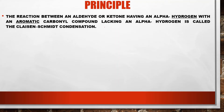Claisen-Schmidt condensation का principle यह है कि इसमें reaction होती है aldehyde या ketone compound की, जिसके पास एक alpha hydrogen होता है, और reaction होती है किसी aromatic carbonyl compound, means aromatic aldehyde या ketone के साथ, जिसमें alpha hydrogen नहीं होता है। इसका mechanism aldol condensation की तरह ही होता है। इसमें simple aldehyde या ketone लेते हैं जिसमें alpha hydrogen present होता है और जब reaction कराते हैं aromatic carbonyl compound के साथ, जो without alpha hydrogen होता है — this is called Claisen-Schmidt condensation reaction.